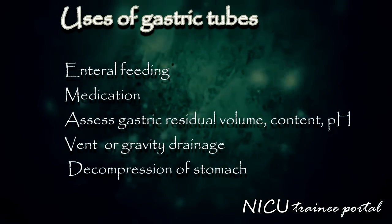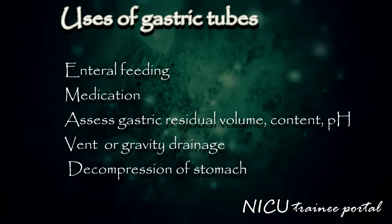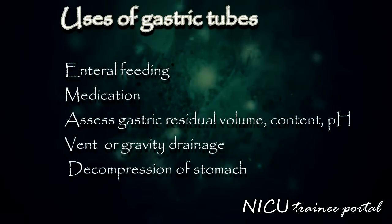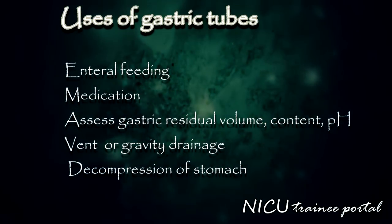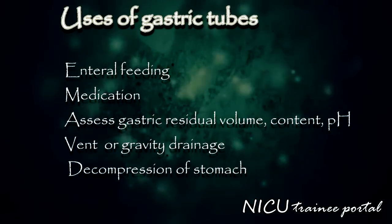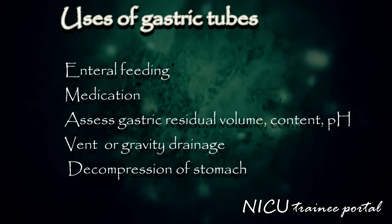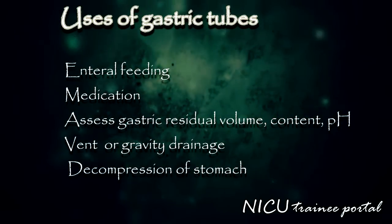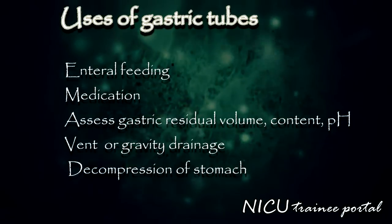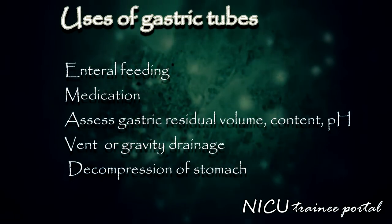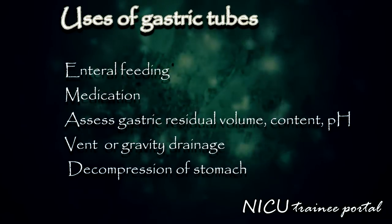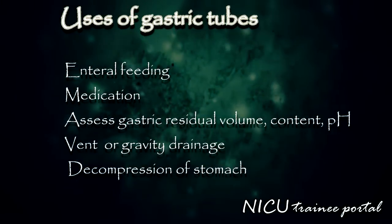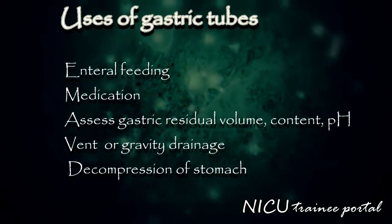Once placed, the gastric tube can be used to provide enteral feeding or medication, and for checking the stomach contents for either pH or volume and content of gastric residuals. It can also be used for venting or gravity drainage of the stomach. Special double-lumen gastric tubes with multiple distal side holes attached to intermittent or continuous wall suction can be used for decompressing the stomach in cases of anatomical or functional gastrointestinal obstruction.